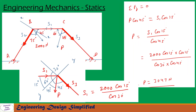Now let us draw the free body diagram at point C. At point C, P acts in one direction, S3 acts in another direction, and S1 acts in a third direction. The angle between S3 and P is 45 degrees, and the angle between S1 and P is 60 degrees. Now let us draw plane YY perpendicular to link CD. Since YY is perpendicular to this link, the angle between P and YY is 45 degrees. The angle between S1 and P is 60 degrees, and since the angle from P to YY is 45 degrees, the angle between S1 and the YY plane becomes 15 degrees.